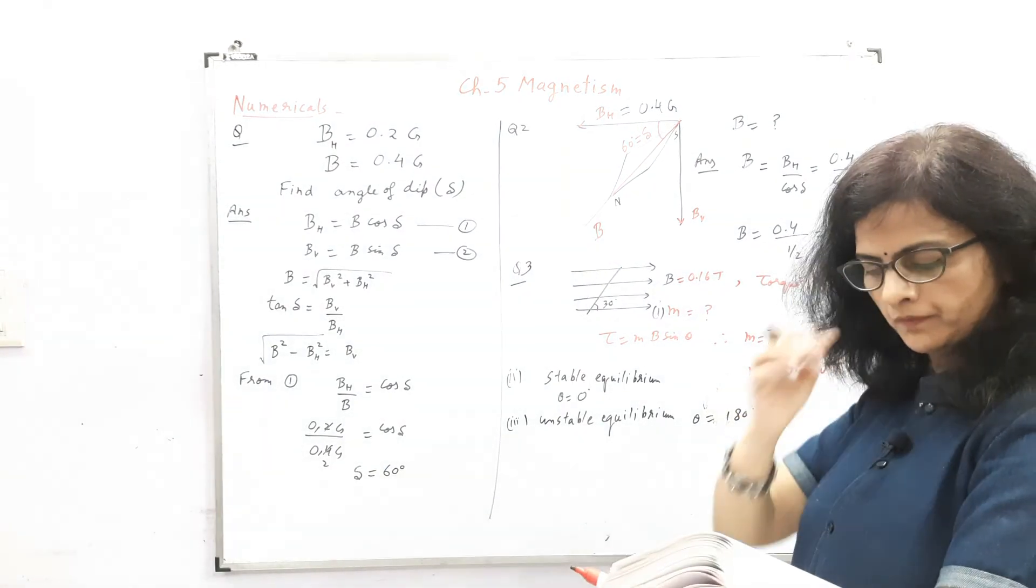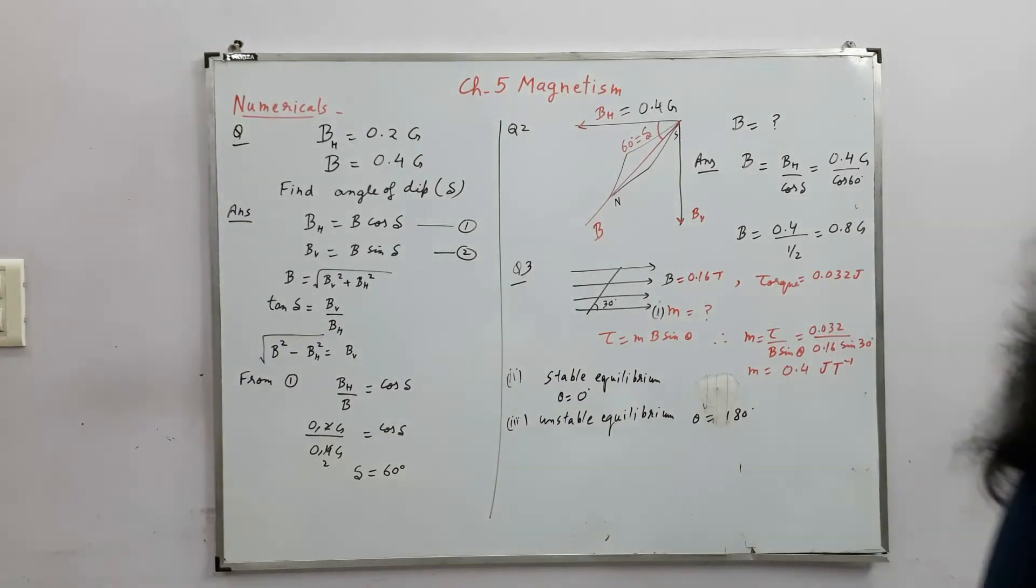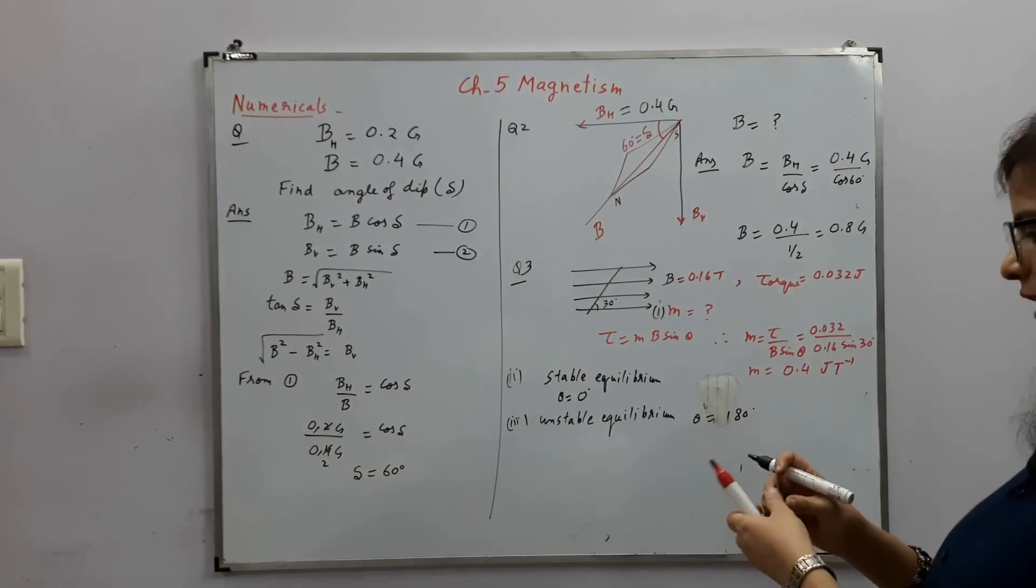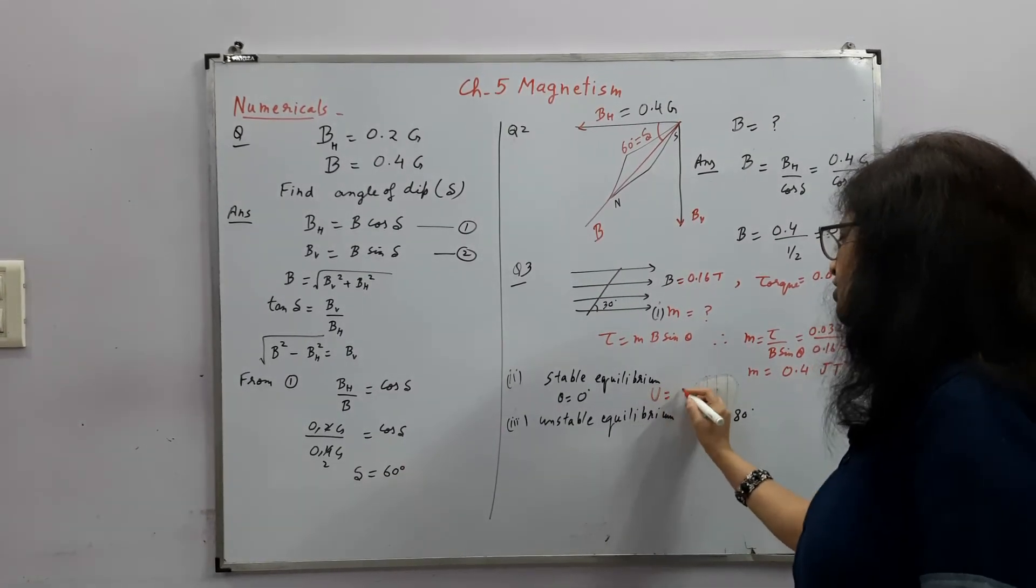And unstable means unstable equilibrium, theta is 180 degree. And then what is its potential energy in the field for cases 1 and 2? So here you have to find the potential energy for both the cases.